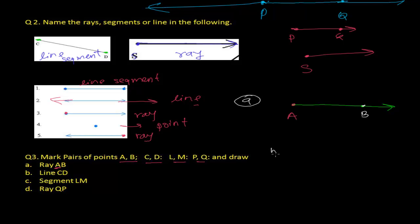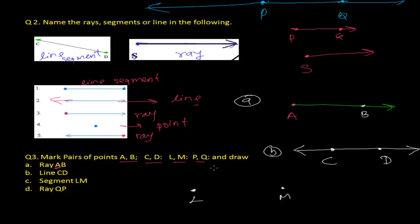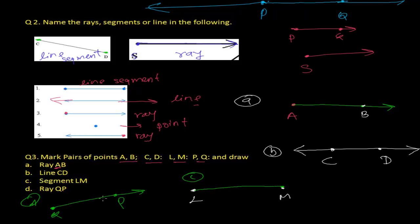For line CD, C and D are points that the line passes through — we draw a line through C and D. Segment LM: L and M are the two endpoints, and the segment LM is the shortest distance between them, which we can measure. For ray QP, Q is the starting point and it goes on through P — so this is ray QP.